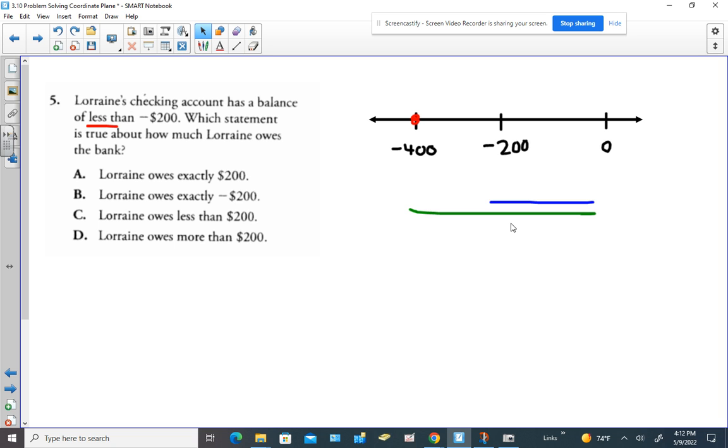Choice D, Lorraine owes more than $200. So this is owing $400. This is owing $200. Is the green line more than the blue line? It is.